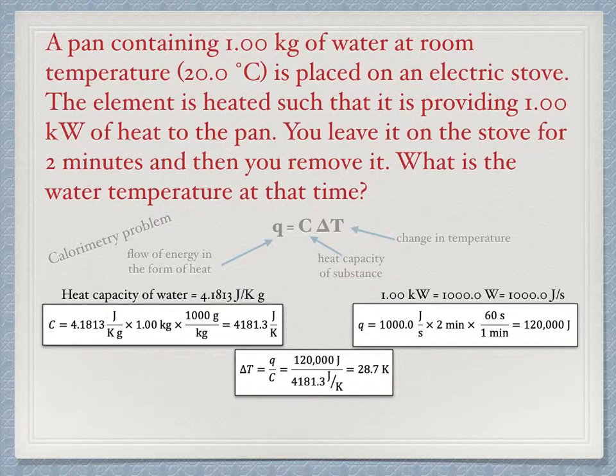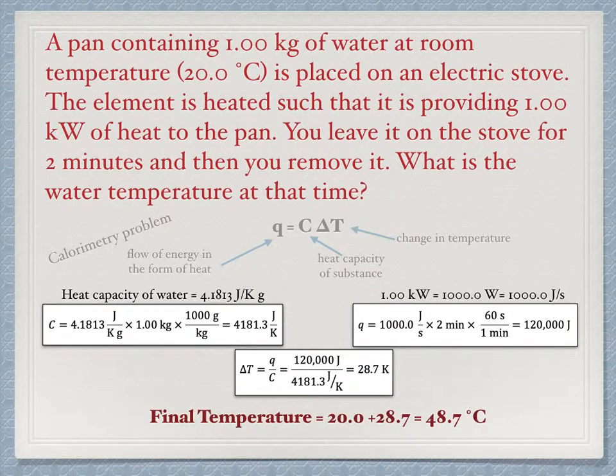Note that this is the change in temperature, so the final temperature is 20.0 plus 28.7 equals 48.7 degrees Celsius. This is the answer to the problem.